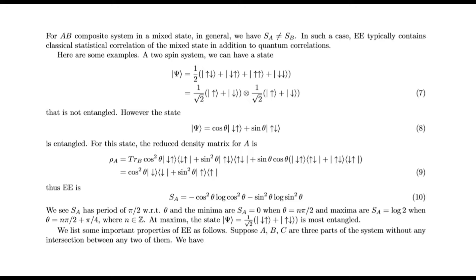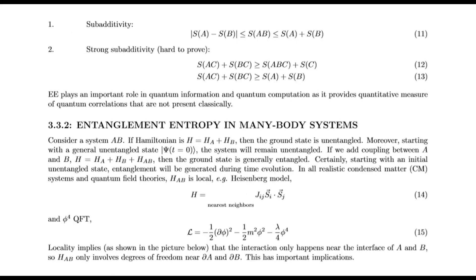We list some important properties of entanglement entropy. Suppose A, B, C are three parts of the system without any intersection between any two of them. We have sub-additivity and strong sub-additivity. Entanglement entropy plays an important role in quantum information and quantum computation as it provides a quantitative measure of quantum correlations that are not present classically.